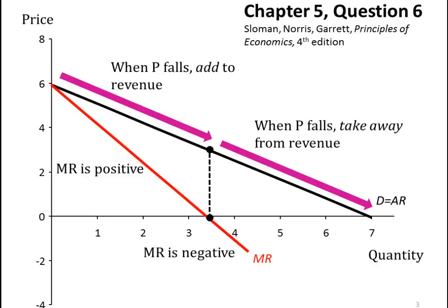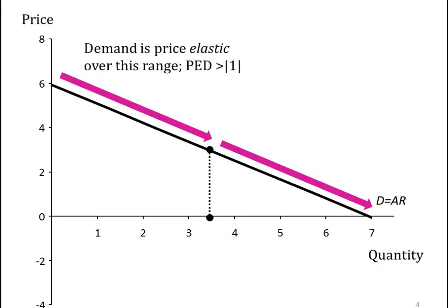If you look in your textbook under the total revenue test, you'll find that when price falls but total revenue increases, demand must be price elastic — demand is relatively responsive to a change in price. Over this top half of the demand curve, when price falls, marginal revenue is positive, so total revenue must be rising. Price falls, total revenue rises: demand is price elastic.